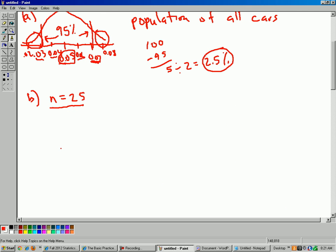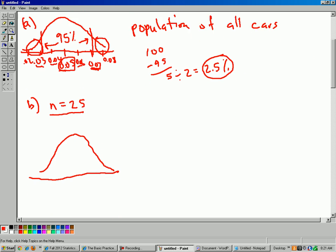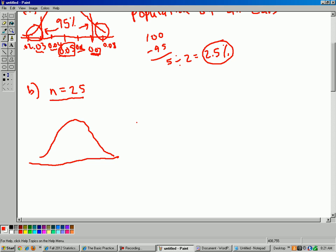Now, let's get a more precise answer. So first we need our sampling distribution. So draw another normal curve. And we can assume it's normal because we have the second rule in Chapter 11. It says if your population is normal, then your sampling distribution is automatically normal. So let's write sampling distribution here.